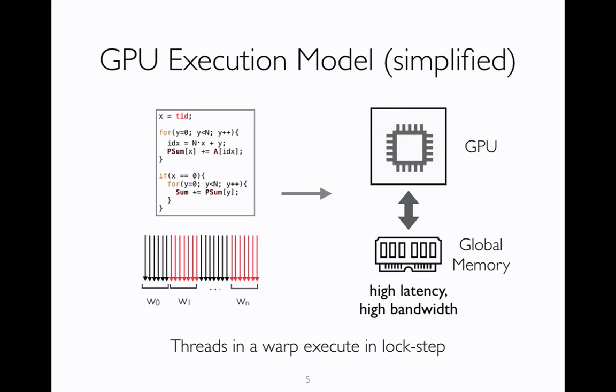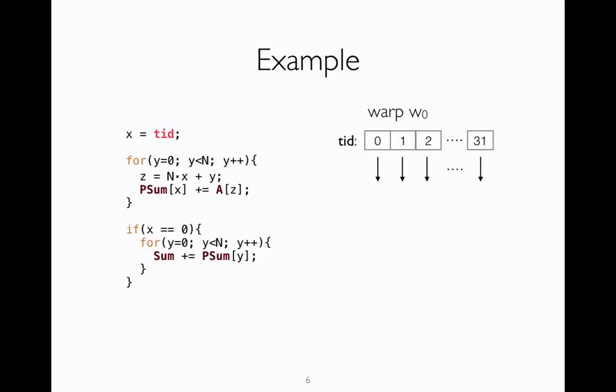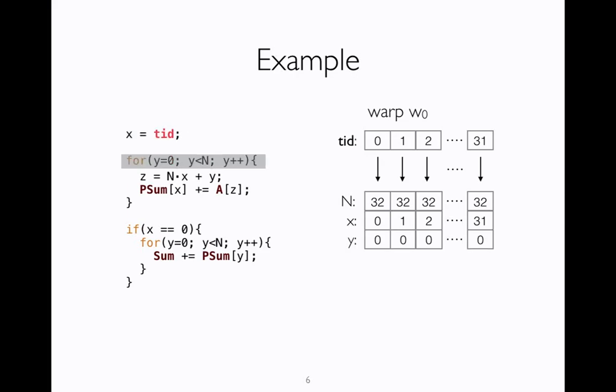Now let's look at an example of how the programming model works, and then we look at uncoalesced accesses and what the problem is. Let's see how a warp executes this particular kernel. We have thread IDs ranging from 0 to 31 in this warp, and n is initialized to a value 32 in all threads. When the first statement is executed by the warp, x gets value 0 to 31 in each of these threads.